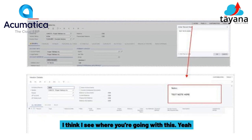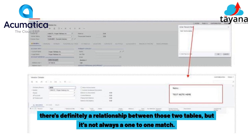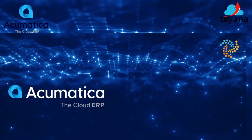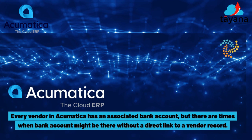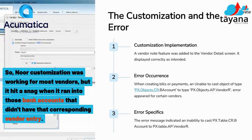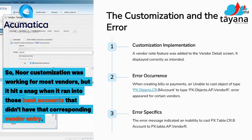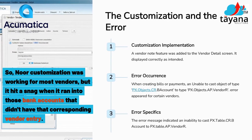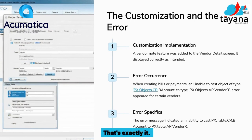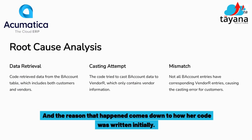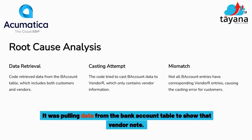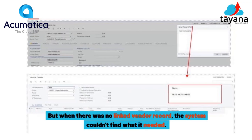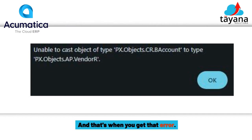There's definitely a relationship between those two tables, but it's not always a one-to-one match. Every vendor in Acumatica has an associated bank account, but there are times when a bank account might be there without a direct link to a vendor record. So Noor's customization was working for most vendors, but it hit a snag when it ran into those bank accounts that didn't have a corresponding vendor entry. Her code was pulling data from the bank account table to show that vendor note, but when there was no linked vendor record, the system couldn't find what it needed, and that's when you get that error.